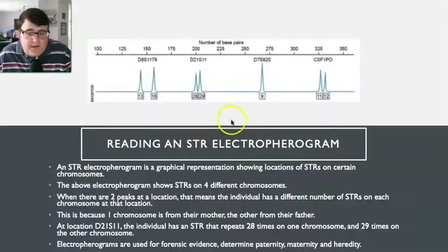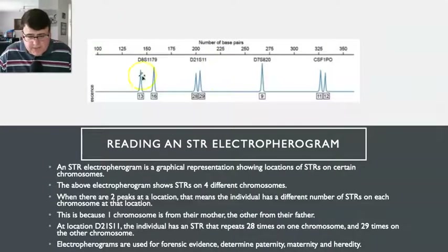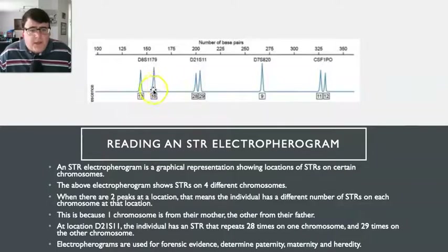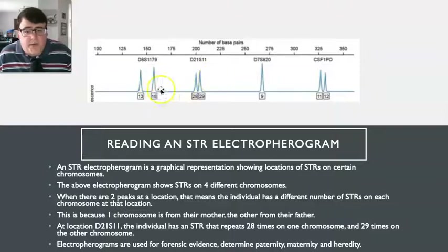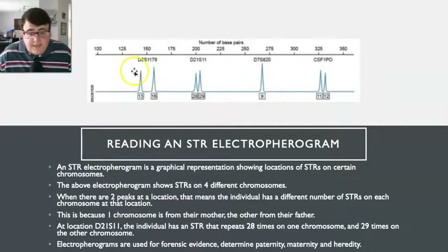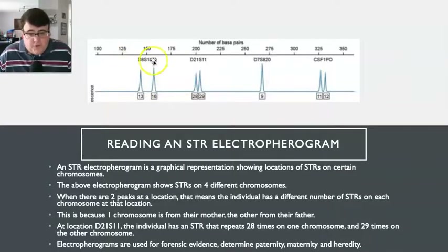We do that comparison through an STR electropherogram, which is what's shown here — this is very similar to the one in your textbook. An STR electropherogram is physically just a graphical representation showing the locations of STRs on certain chromosomes. For example, here is the graphical representation of the STRs at the location DAS1179, which is a location on a chromosome.